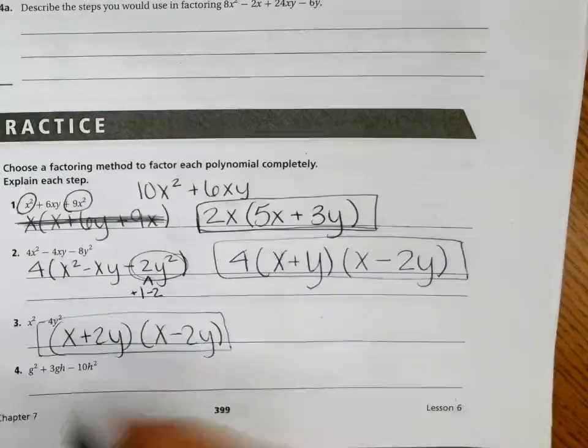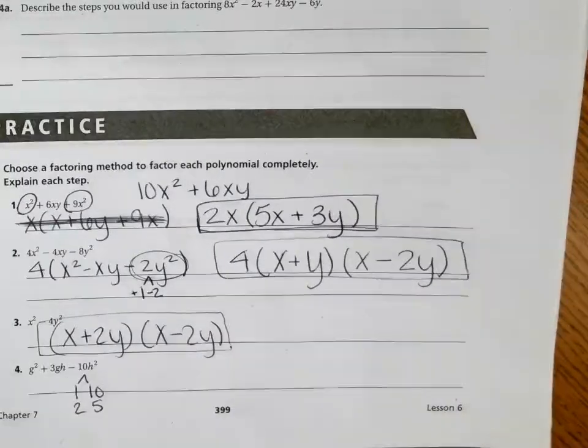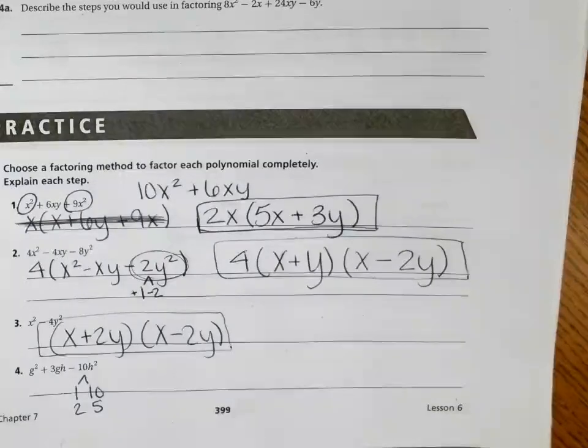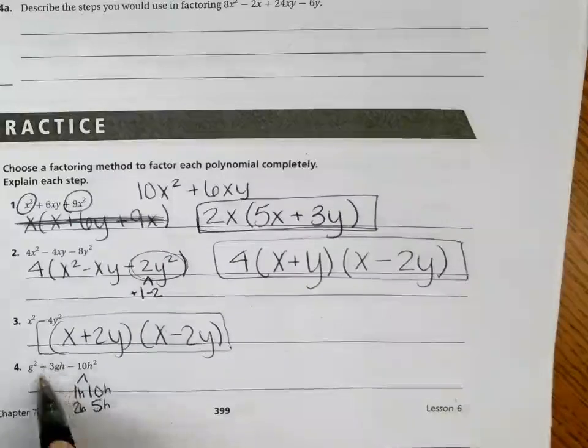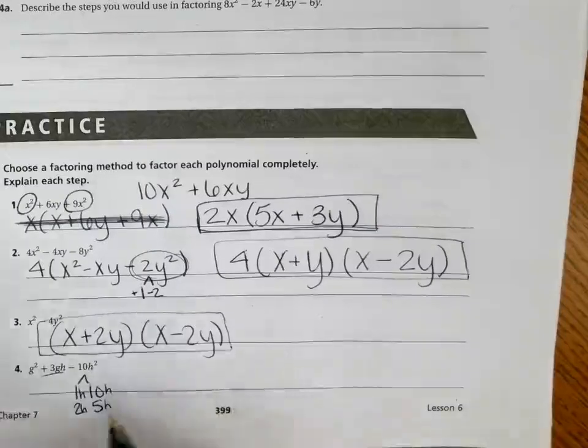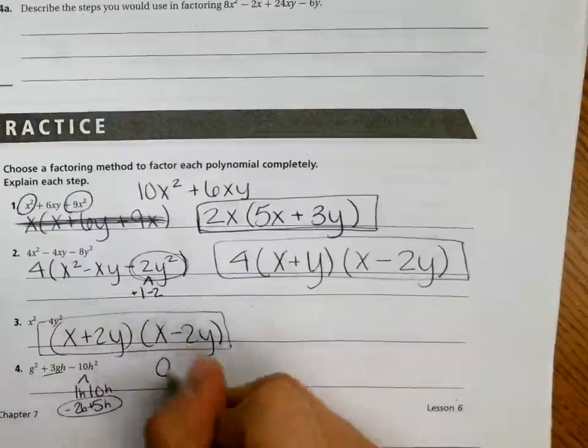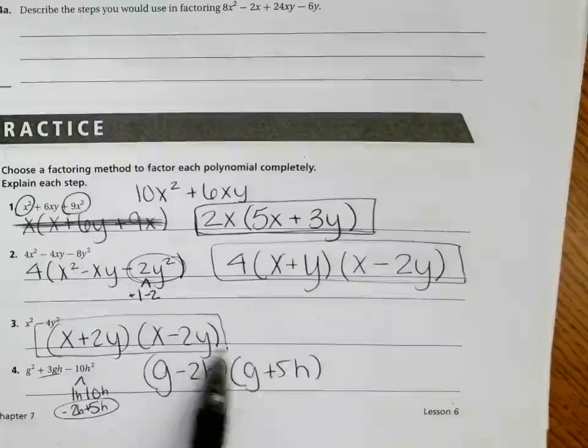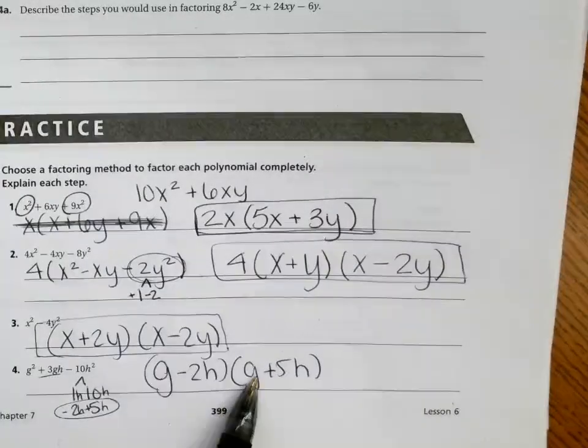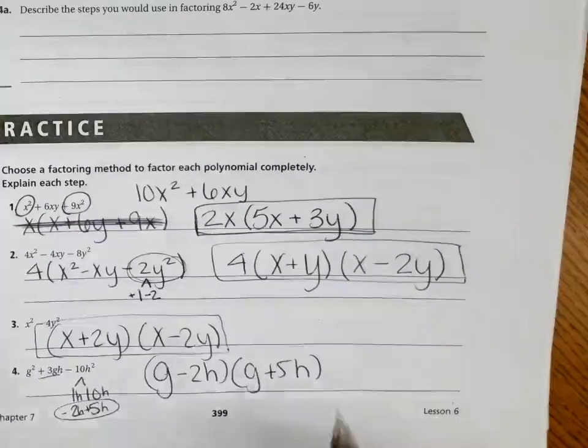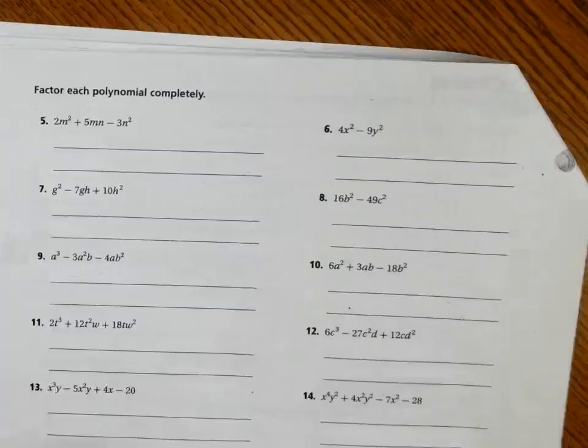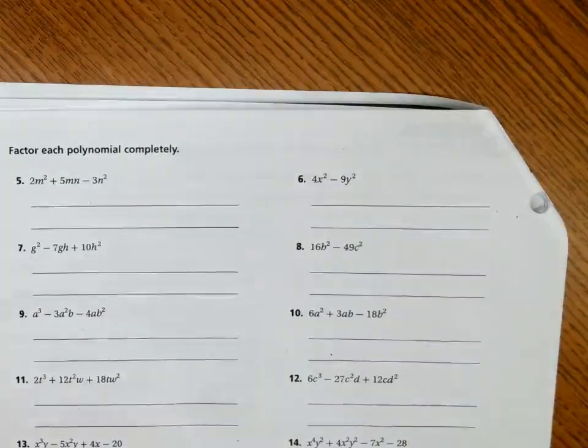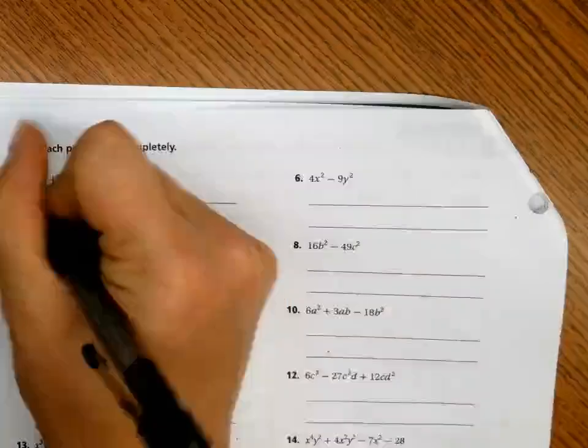We have 5 minutes. Try numbers 5 and 6 with your table partner.